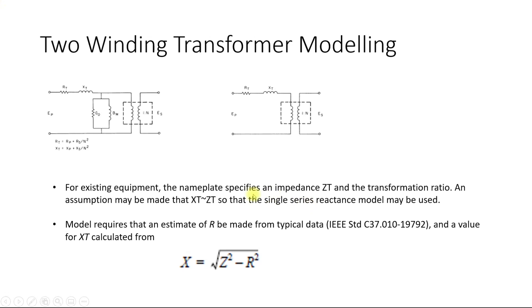Usually on a transformer nameplate rating, only the impedance Z is provided. Whenever impedance is provided, you can estimate the value of R using IEEE standard C37.10-1992. The value of Xt is then calculated as X equals the square root of Z² minus R², which is simply the Pythagorean theorem, because Z is the total impedance combining the R part and the X part.